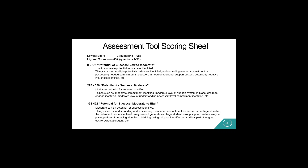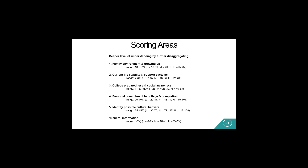The assessment puts students in three categories: one is their potential for success is low to moderate; two is moderate; and the third level is moderate to high. Not only does it put the students in these three areas, but it breaks it down and disaggregates the data at an even greater rate — breaking down each level. So in family environment growing up, it will break down whether it is low, medium, or high. The reason why this is tremendously helpful is when we're building the interventions, if they scored high on current life stability and support systems but low on grit, we can build up their intervention to support them in grit, or the opposite.